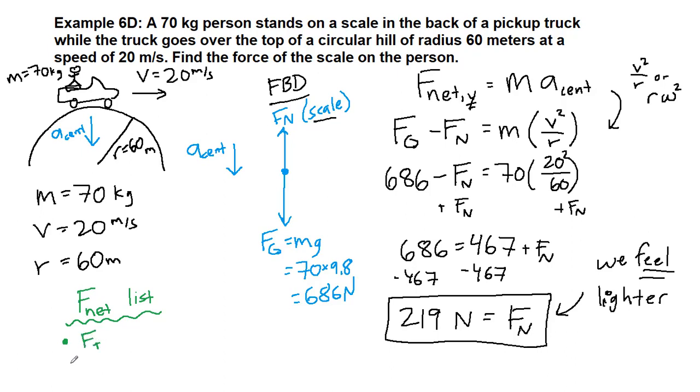In example 6c, the one right before this, part a, it was tension minus gravity. In part b, it was tension plus gravity. Here in this example, if we continue our list, we have gravity minus the normal force is the net force that is going into circular motion.